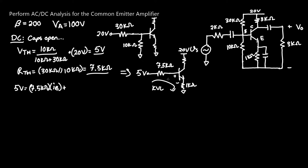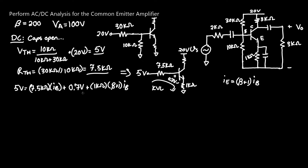We also include the 0.7 V diode drop, plus the 1 kΩ emitter resistor times I_E. To avoid having two unknowns, we substitute I_E = (β + 1) × I_B, since the collector current is β × I_B and the emitter includes that extra term. Substituting gives us one variable: 5 V = 7.5 kΩ × I_B + 0.7 V + 1 kΩ × (β + 1) × I_B.